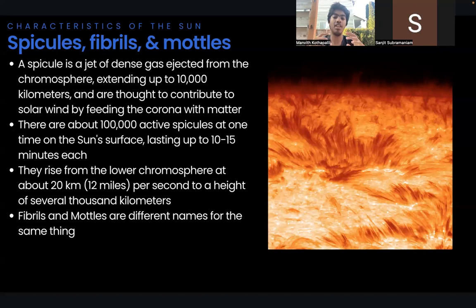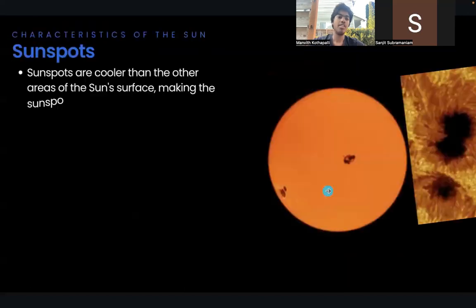About 100,000 spicules are active on the sun's surface at any given time. They rise from the lower chromosphere at about 20 kilometers or 12 miles per second to a height of several thousand kilometers. Within 10 to 15 minutes, they disperse or collapse. They move upwards at speeds between 15 and 110 kilometers per second from the photosphere and last a few minutes each.